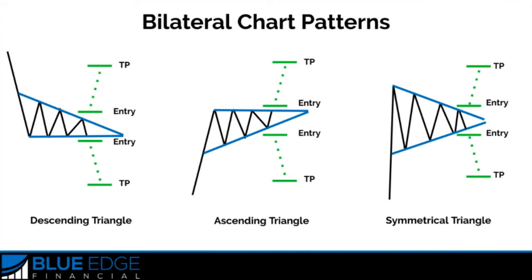The only thing to be careful with is that sometimes our order could be triggered if we set it too close to the top or bottom of the formation, and it could just be a fake out. So if you want to be a little more conservative, you can place it a few pips higher than the top or a few pips lower than the bottom. Also, make sure to always place your stop loss — you can place it just above or below the formation once your order has been triggered.